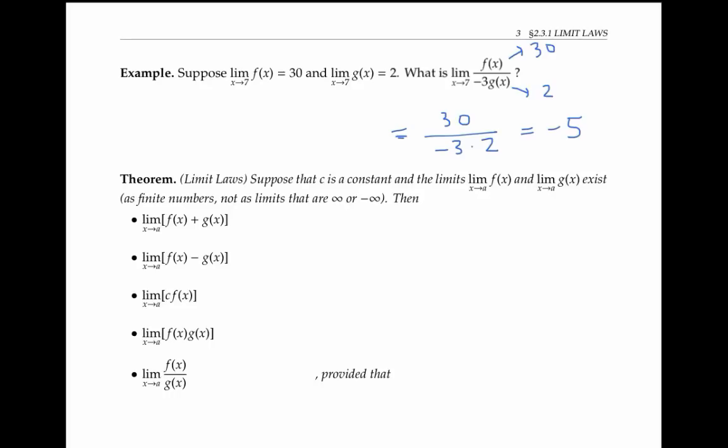In calculating this limit by plugging in numbers for the components, we were actually using the limit laws, which I'll now state. Suppose that c is a constant, just some number, and that the limits as x goes to a of f(x) and g(x) exist as finite numbers, that is not as limits that are infinity or negative infinity.